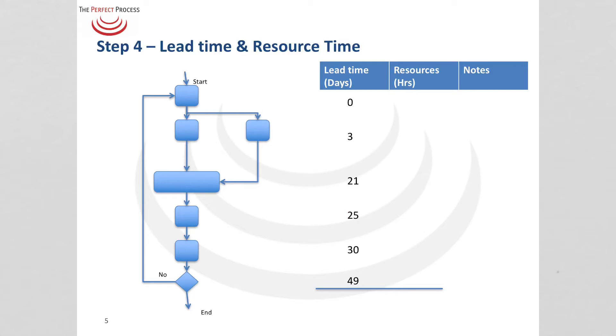Following that we can see we've got activities here four days later so that's 25 days, and then five days later that's 30 days, and then finally 19 days later we see the decision at the end of the process giving us a total of 49 days.